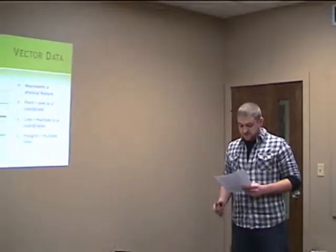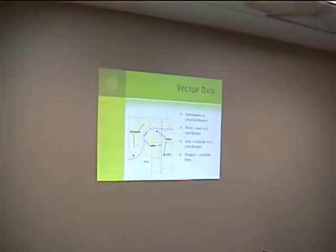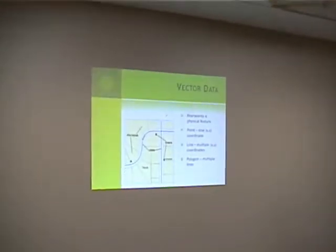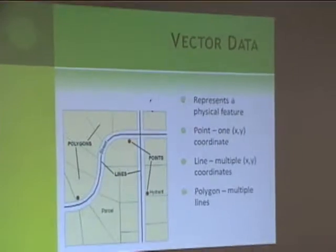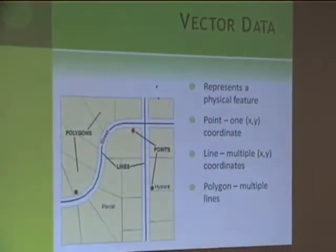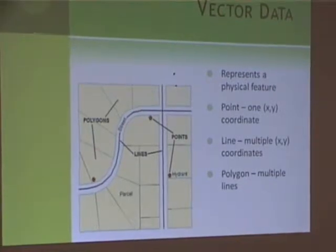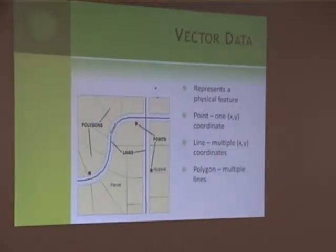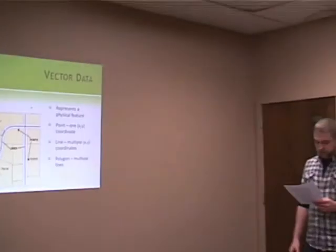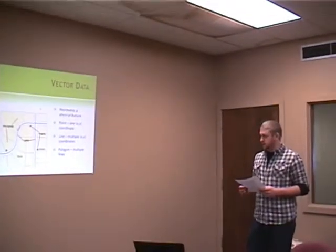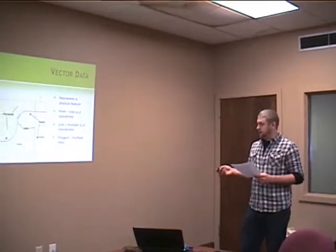Now I'll discuss vector data. Raphael Quimpo does an excellent job at describing vectorization in his book GIS Modules and Distributed Models of the Watershed. Vector data consists of points, which are single x and y coordinates; lines, which are multiple x and y coordinates next to each other; and polygons, which are multiple lines connected together.